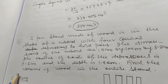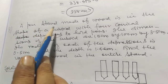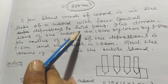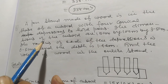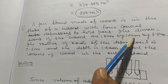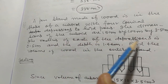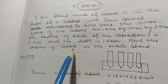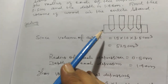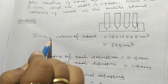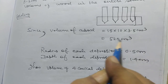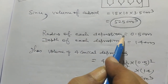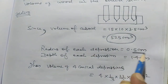Now I want to discuss problem number four. A pen stand made of wood is in the shape of a cuboid with four conical depressions to hold pens. The dimensions of the cuboid are fifteen centimeter by ten centimeter by three point five centimeter. The radius of each depression is zero point five centimeter and the depth is one point four centimeter.